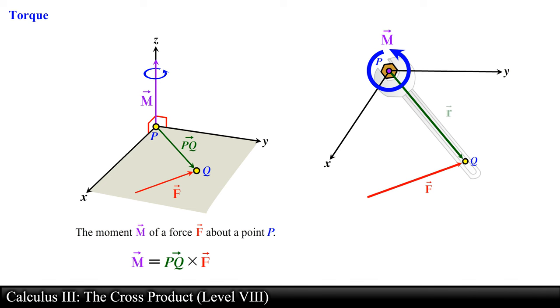If we use vector r to denote the position vector from point P to the point where the force F is being applied, in this case point Q, then the torque about the origin or point P is represented by the Greek letter tau and can be written alternatively as follows: vector r crossed with vector F.